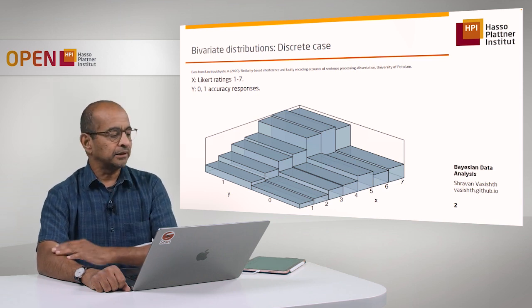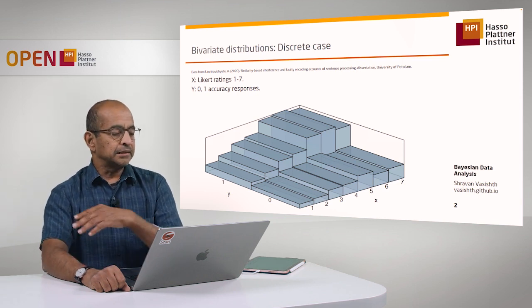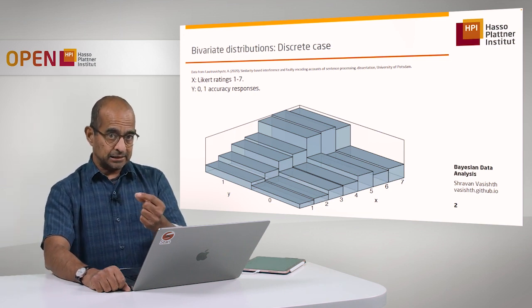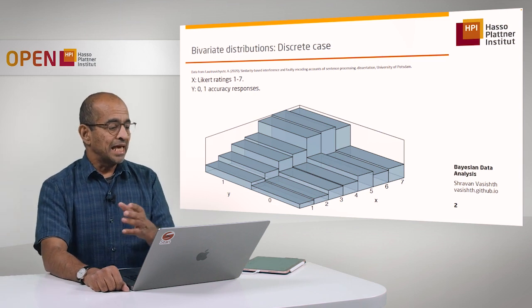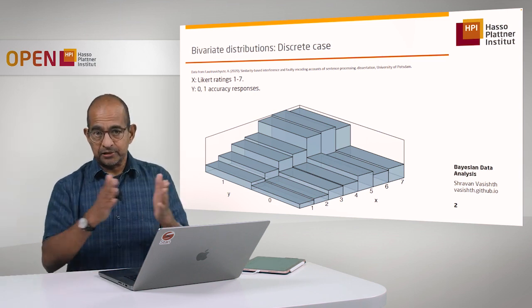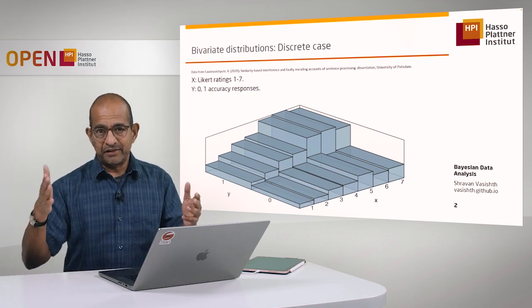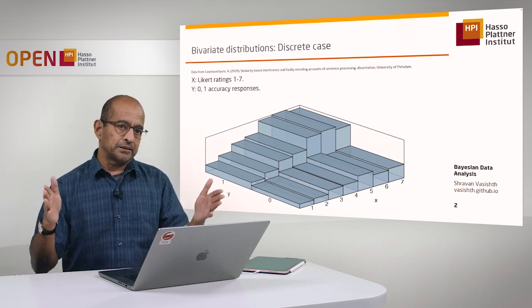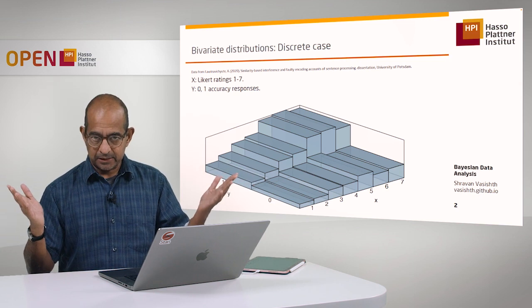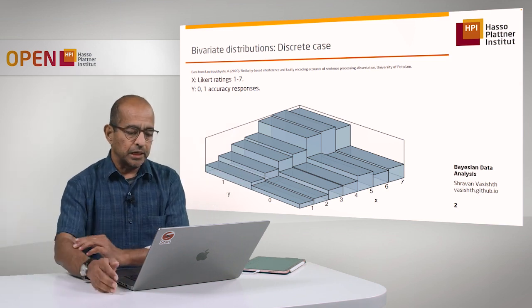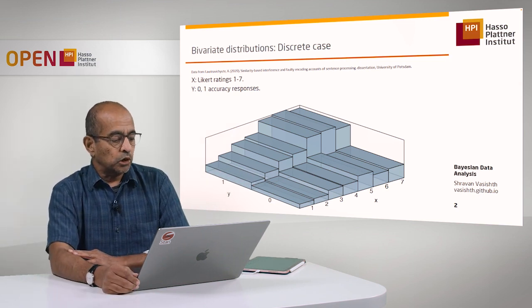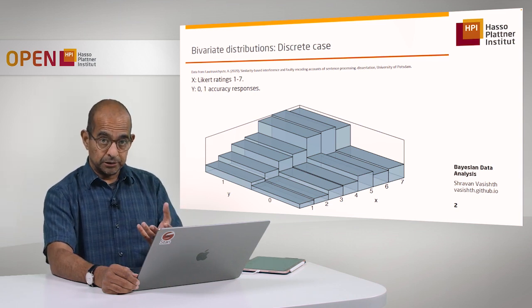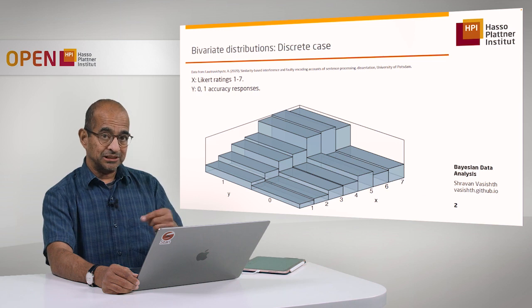You can assume a Bernoulli likelihood there. The other response that we're getting from each participant simultaneously, along with the 0/1 response, is a Likert rating response — a rating from 1 to 7, where 7 could be perfectly acceptable and 1 would be unacceptable. So we have two random variables, and what we want to consider is the joint distribution of these two random variables.